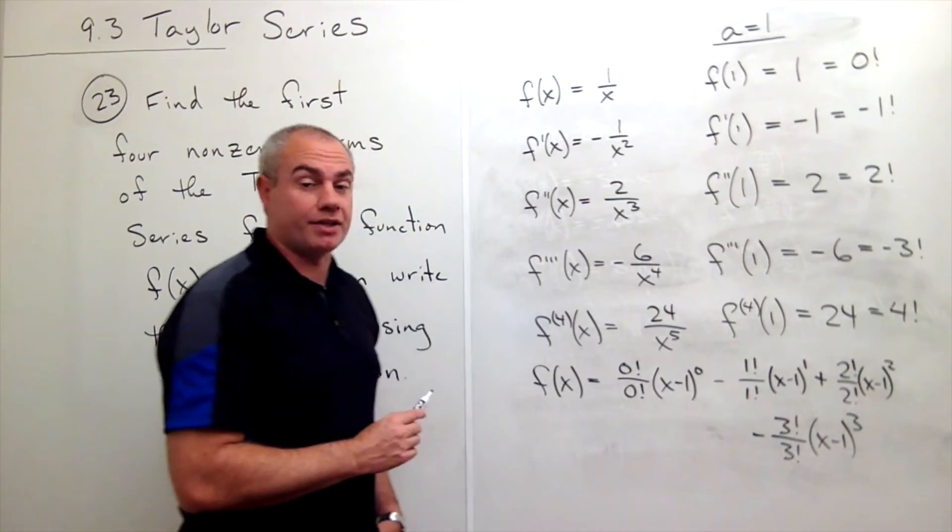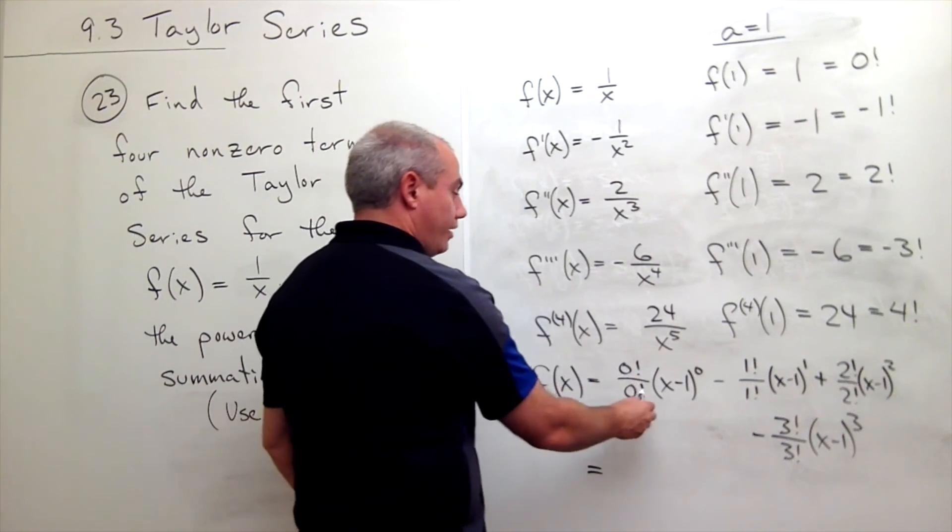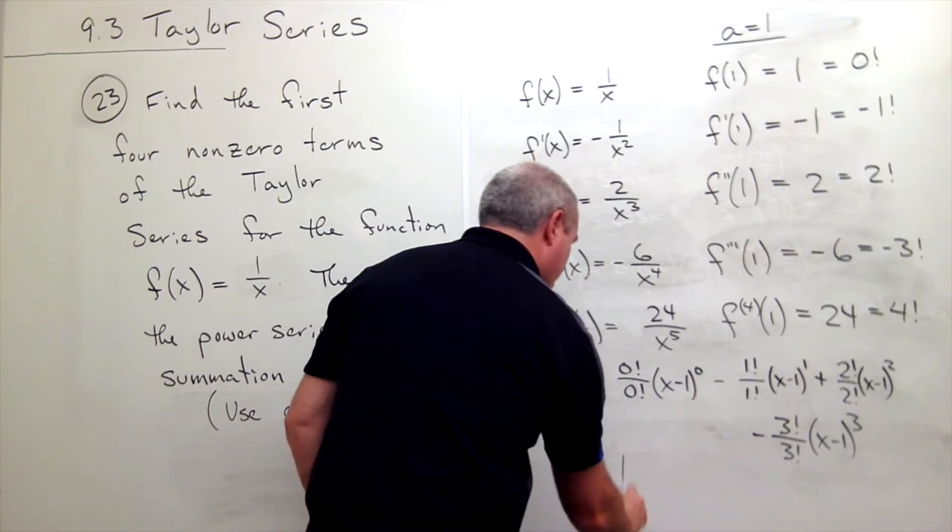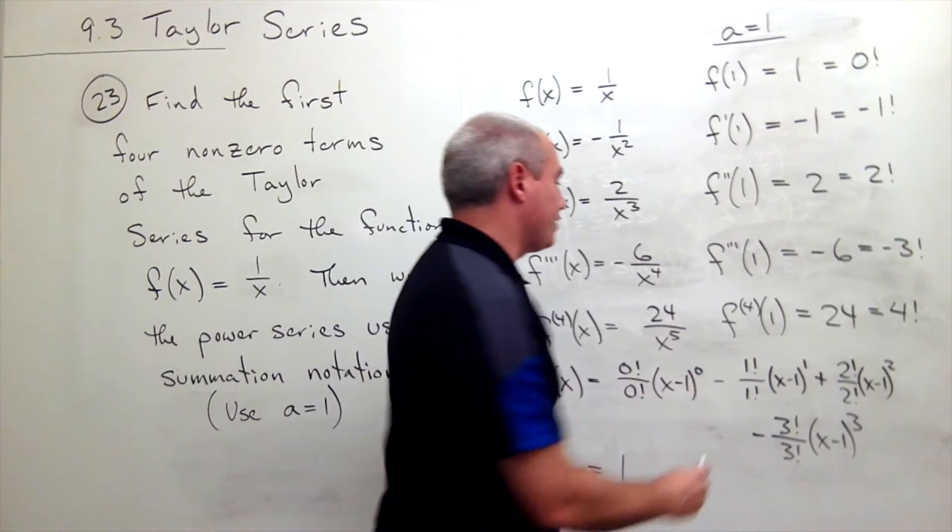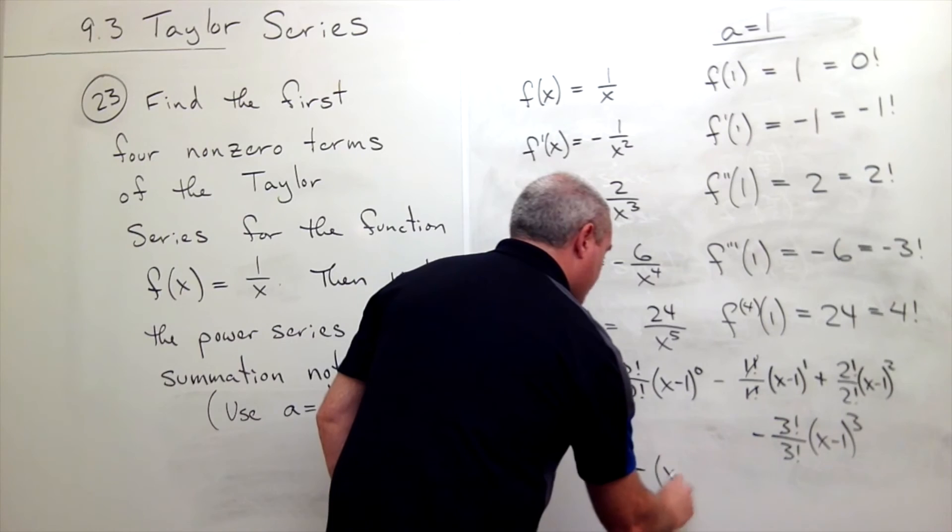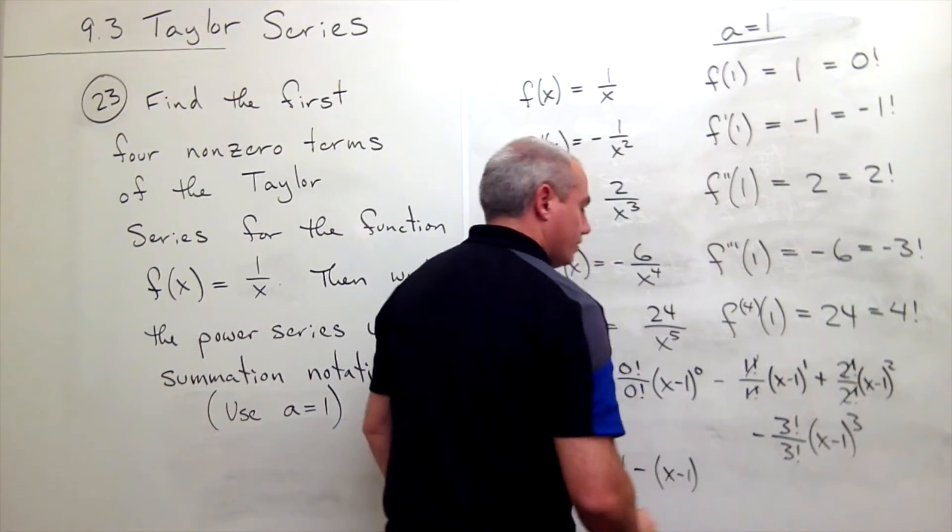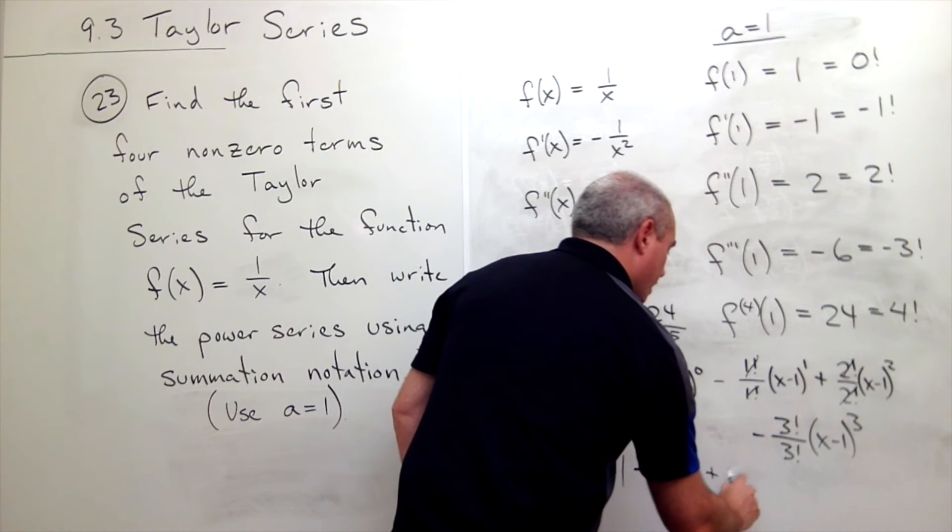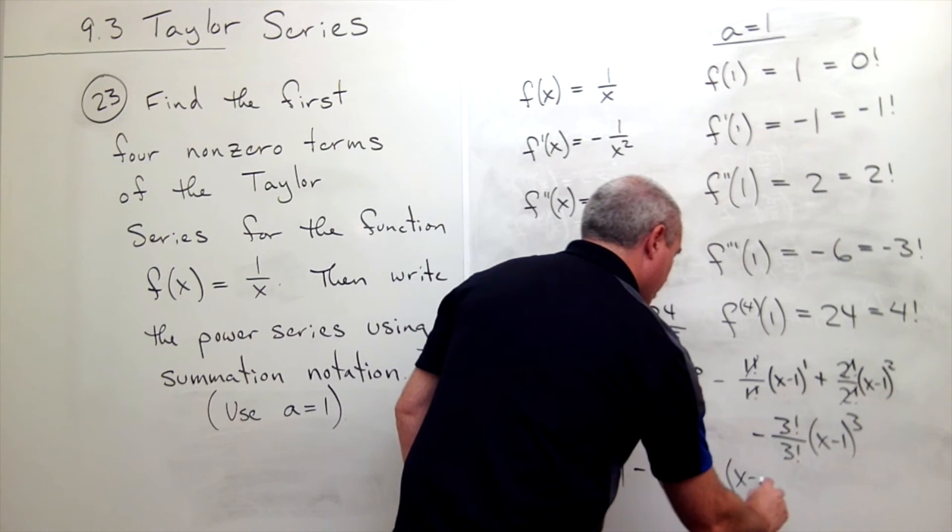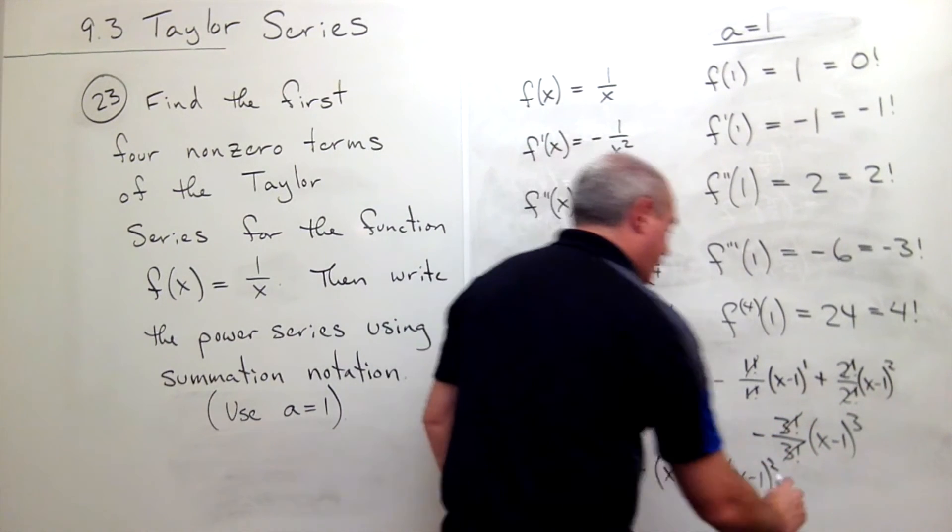Let me rewrite this real quick. This is just 1, and this is just 1, so that's 1. This one, the 1 factorials cancel, and I get minus x minus 1. Here the 2 factorials cancel and I get plus x minus 1 squared. Here the 3 factorials cancel and I get minus x minus 1 cubed.